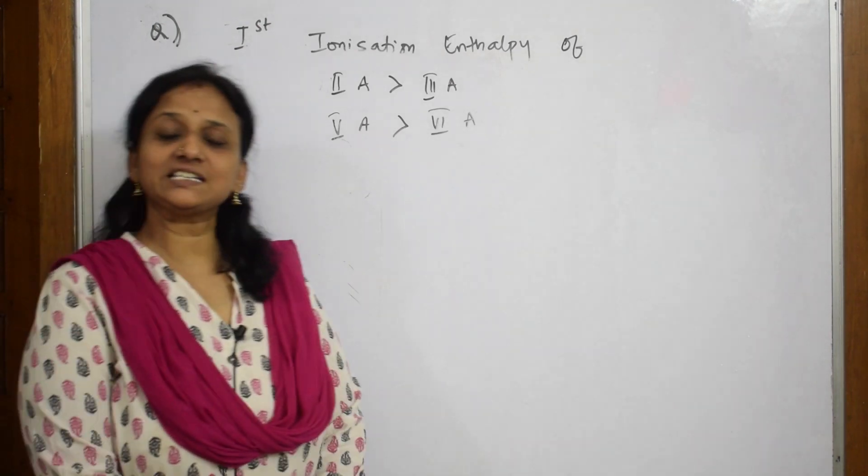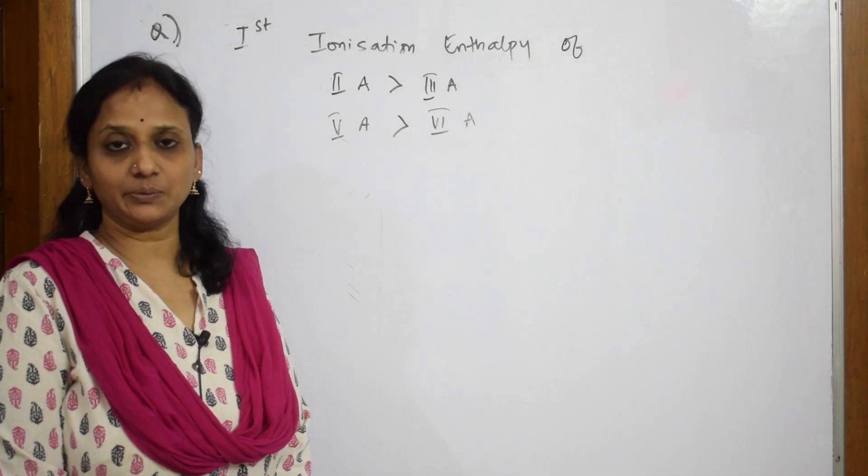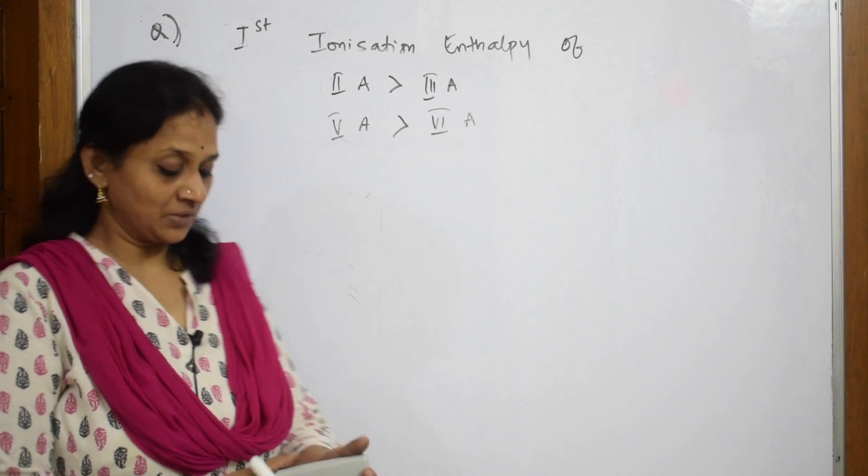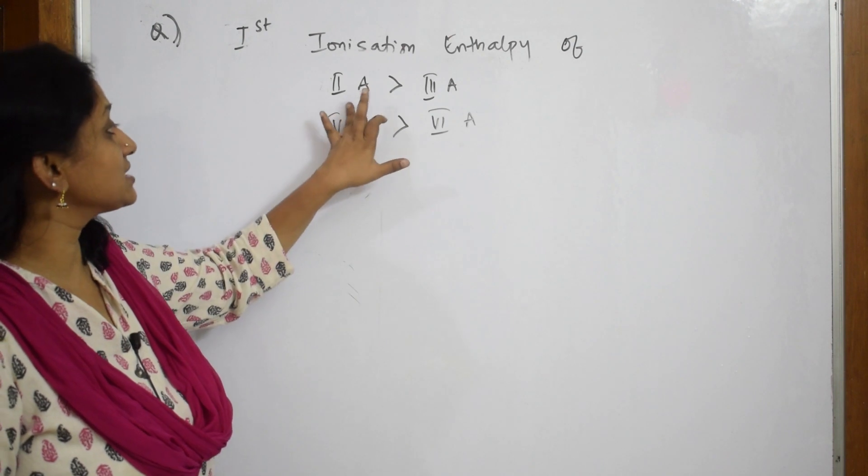Now we've already seen what is ionization enthalpy. Let's start solving questions based on ionization enthalpy - what are the different types of questions asked? The first question: ionization enthalpy of 2a is greater than 3a, 5a is greater than 6a.